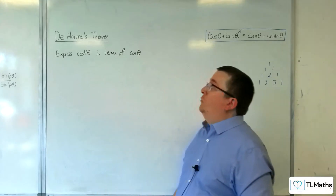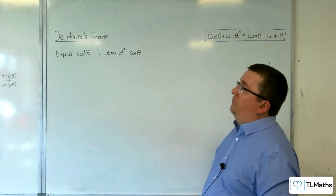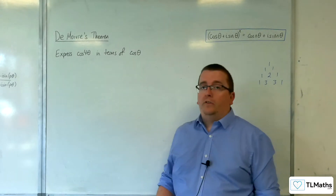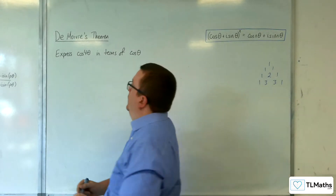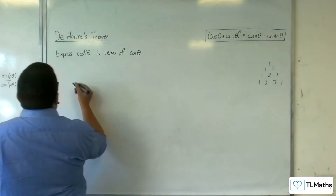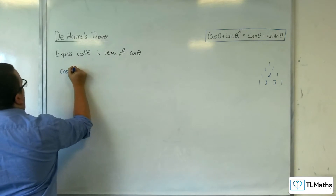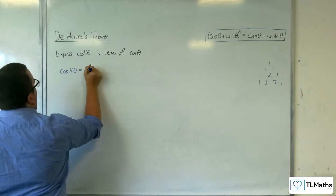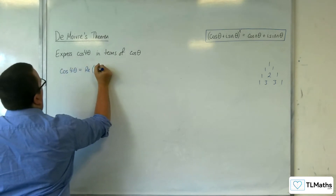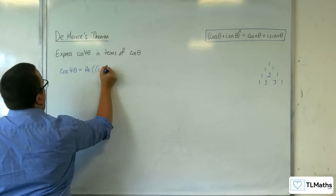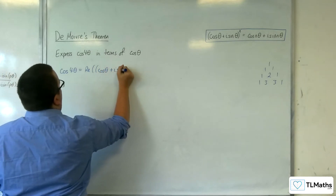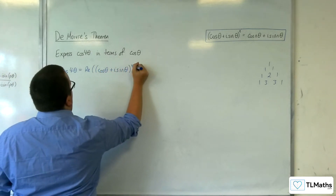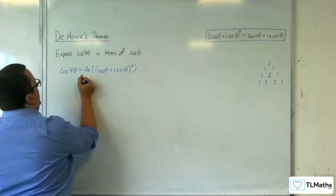In this video, we're going to express cosine of 4 theta in terms of cosine theta. So cosine of 4 theta will be the real part of cosine theta plus i sine theta to the power of 4, expanded.